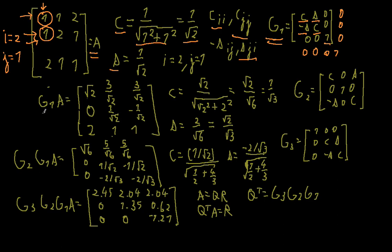Now we apply our Givens rotation to A. As expected, the element we wanted to eliminate is now 0. We get: square root of 2, 3 over square root of 2, 3 over square root of 2, 1 over square root of 2, negative 1 over square root of 2, 2, 1, and 1. Now we do the same thing again, but this time the element we want to eliminate is the next one.